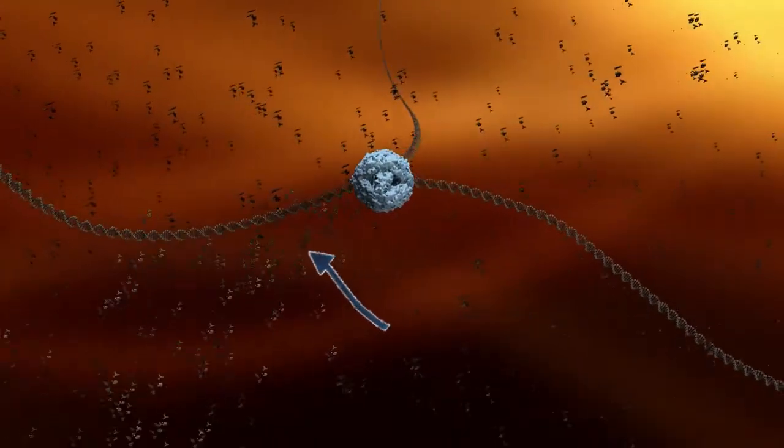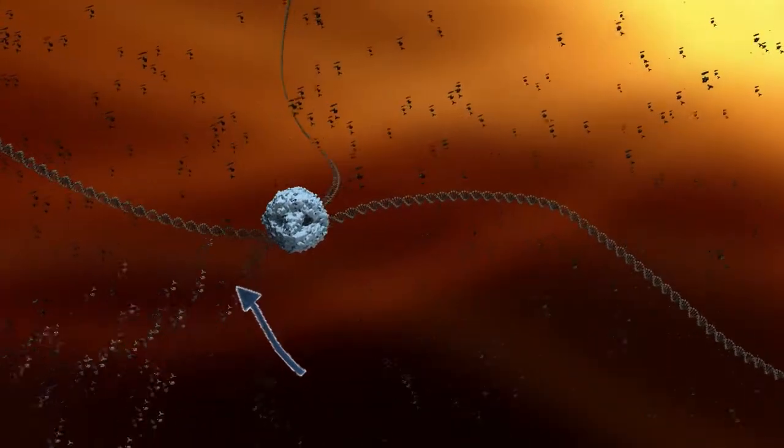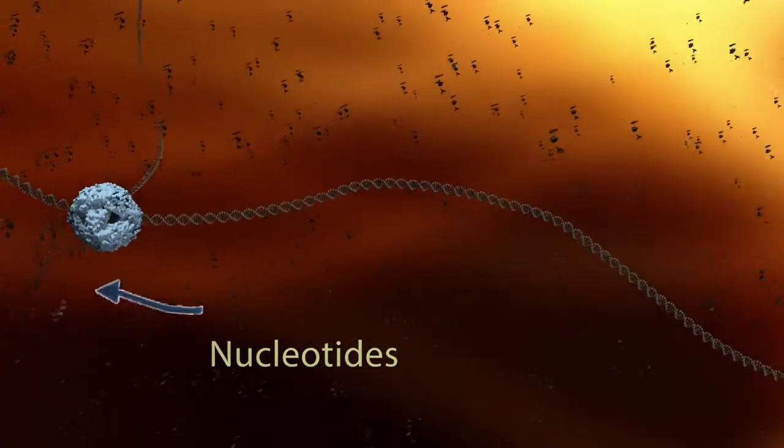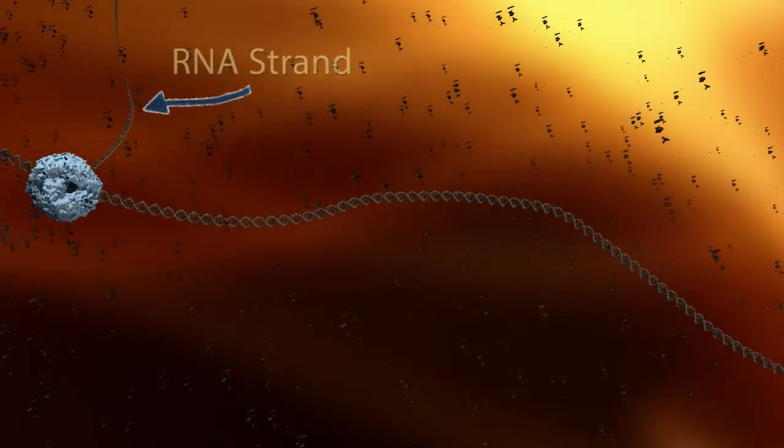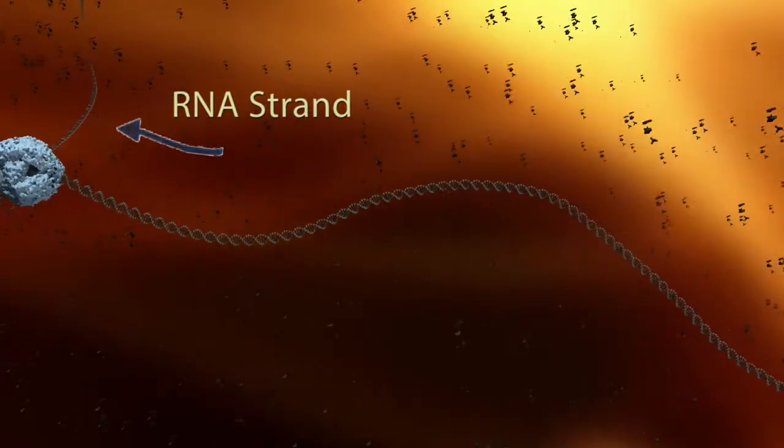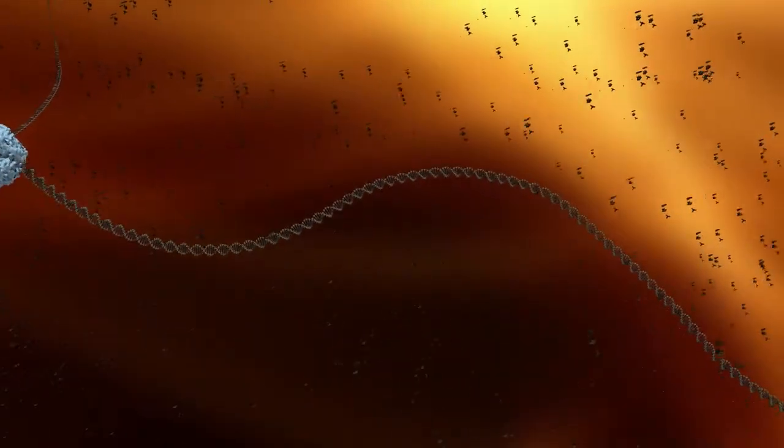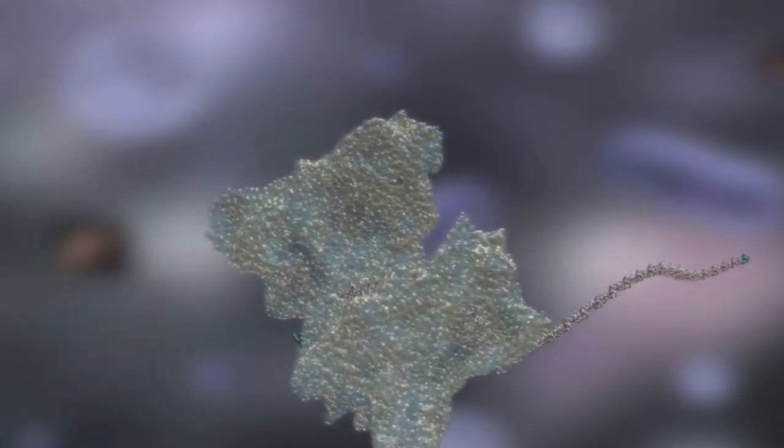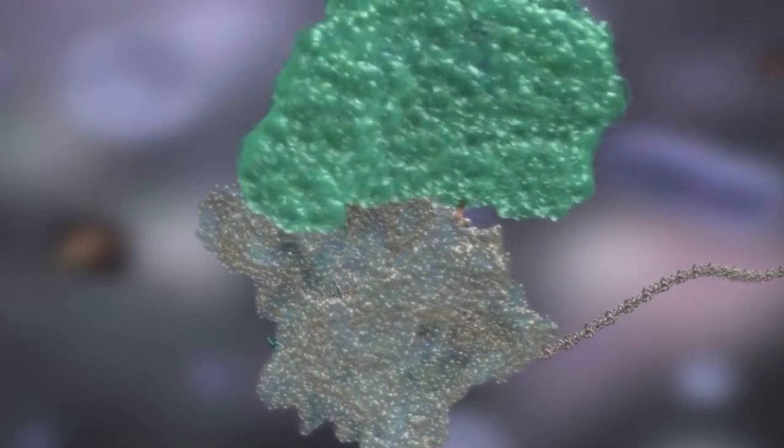Coming into the RNA polymerase are the individual RNA building blocks or nucleotides. Meanwhile, out of the RNA polymerase goes a string of RNA, an exact copy from the section of DNA. That section that is copied is called a gene and it is used as the information template from which a protein is made.